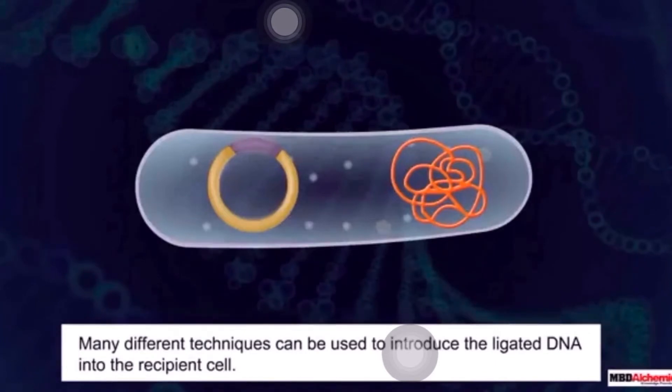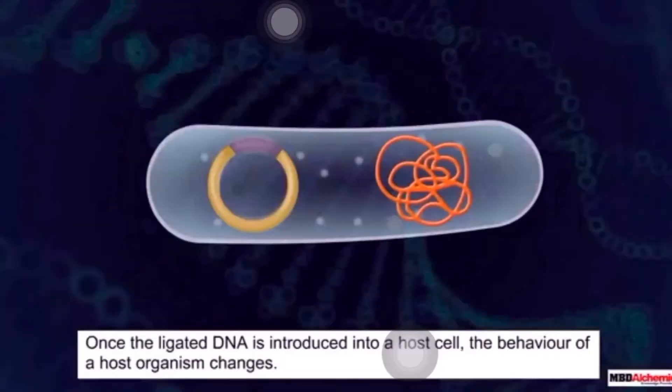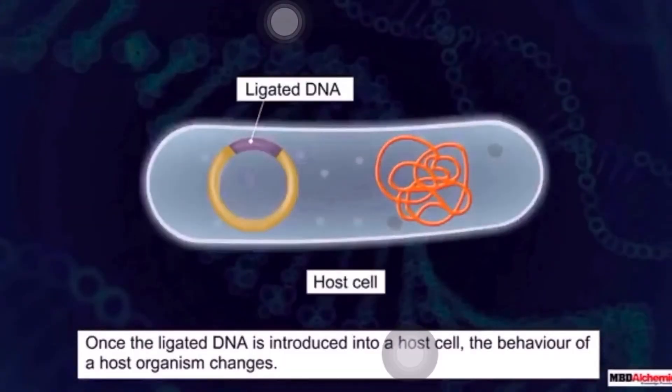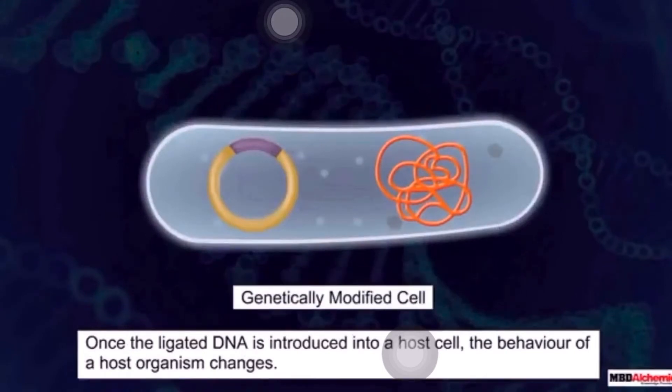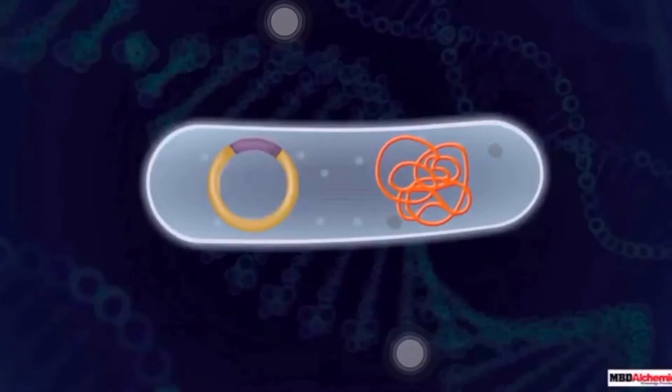The first host cell is made competent. Once the ligated DNA is introduced into the host cell, host becomes genetically modified cell. That is, the behavior of the host organism changes. Let us understand this with an example.